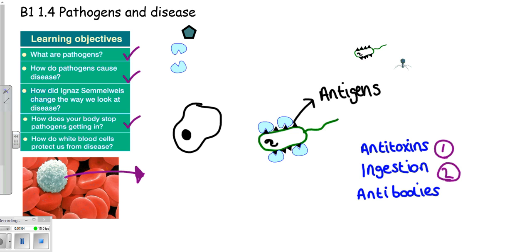Let's quickly recap. Antitoxins will neutralize any toxins produced by a pathogen. During ingestion, the white blood cell will ingest the pathogen and destroy it. And the production of antibodies will bind to antigens and destroy the pathogen. That is the three ways that white blood cells protect our bodies from pathogens and disease.